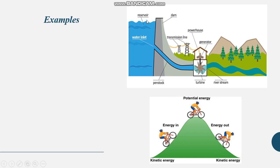So when did the transformation happen? First, potential energy was stored in the water at height. When water flowed, potential energy converted to kinetic energy. Then the kinetic energy of the moving water turned the turbine, which converted it to electrical energy. This is how energy transformation takes place from one form to another. This is an important example — it comes in the exam many times, so you have to explain it in detail.